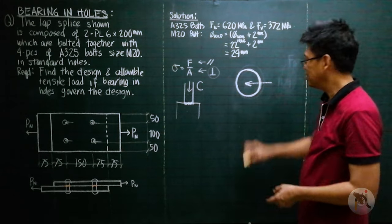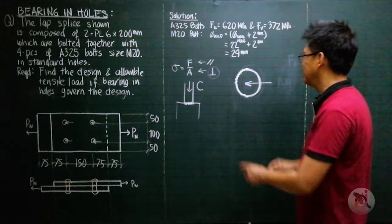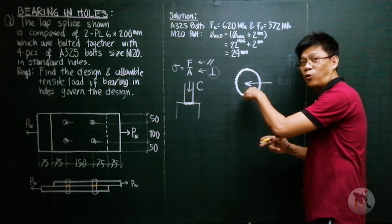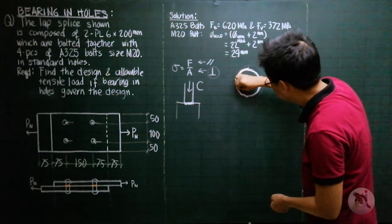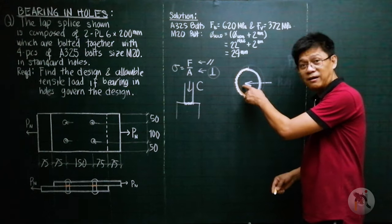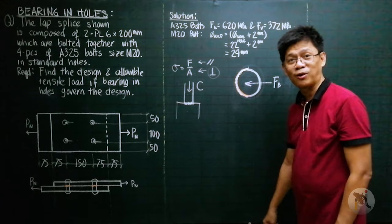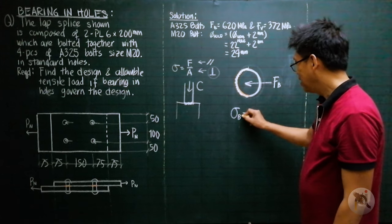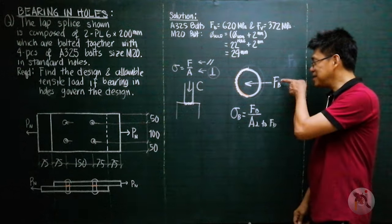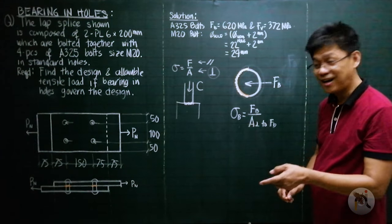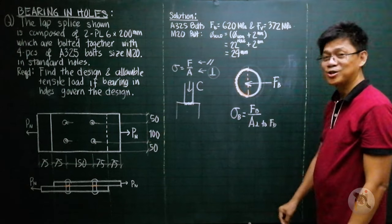This is our hole — it's a little bit bigger. As the bolt pushes the wall or the plate, there will be contact practically at a half circle. This bolt is pushing the half circle of the hole or of the plate to the left, so this portion is our contact surface where bearing stress happens. Since force and area must be perpendicular, this is the bearing force.